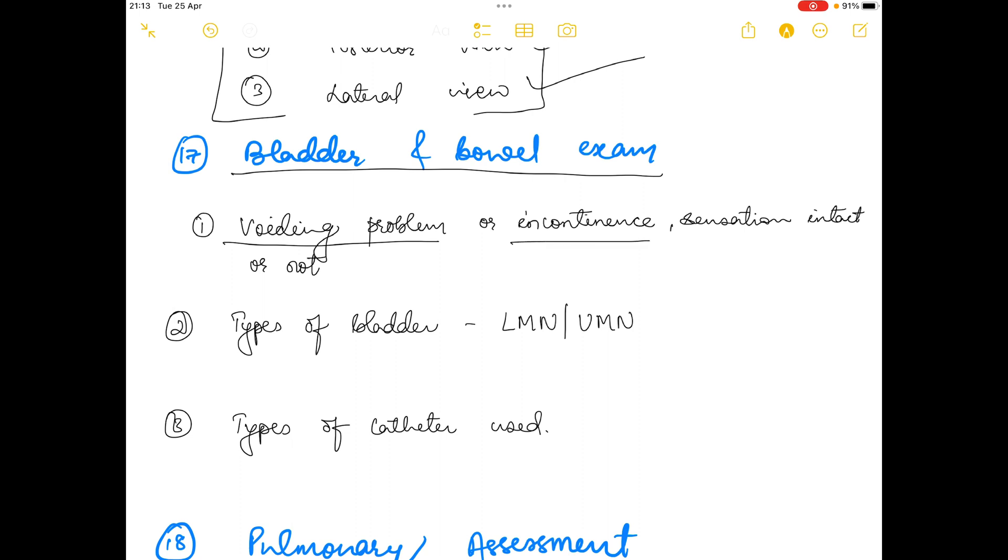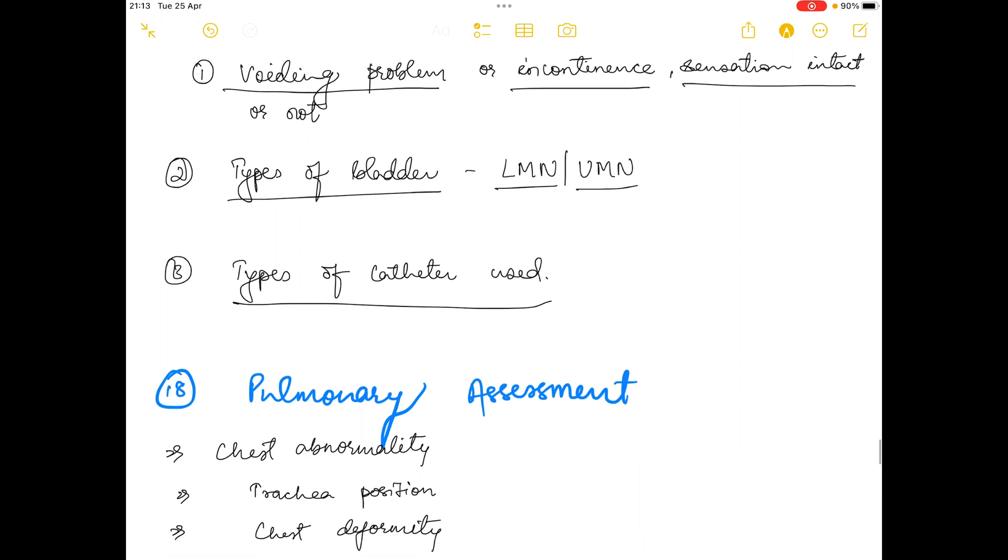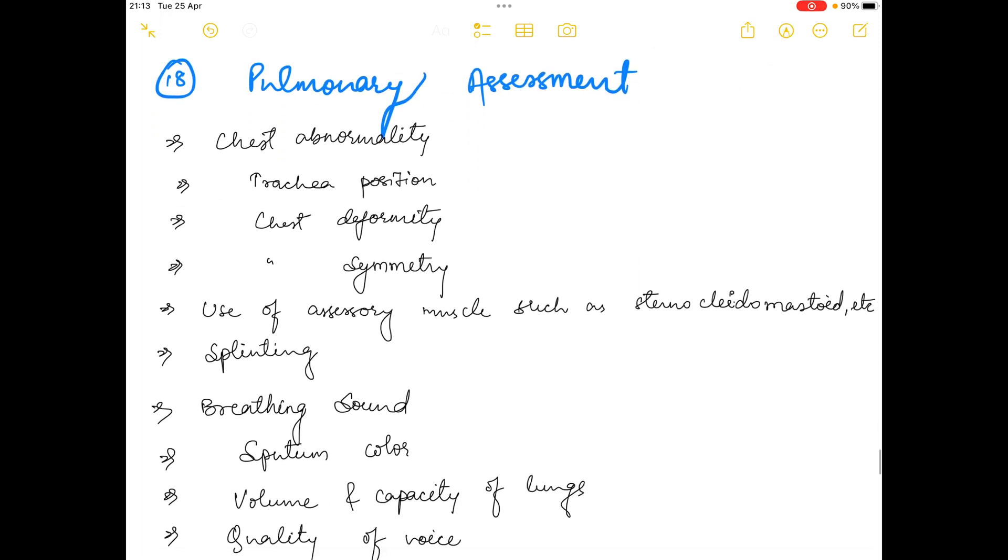Next is bladder and bowel exam. In bladder and bowel exam, what you assess is if there's voiding problems or incontinence, sensation is intact or not, and also the types of bladder such as lower motor neuron or upper motor neuron, and the types of catheter used.